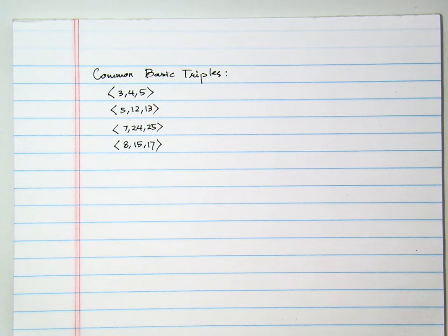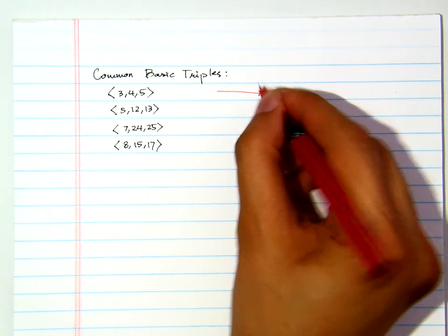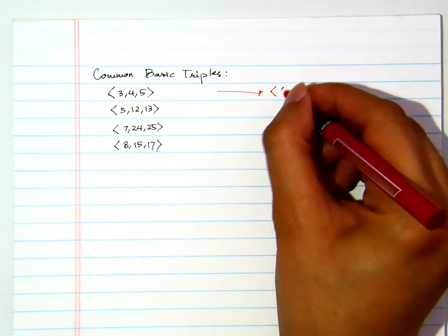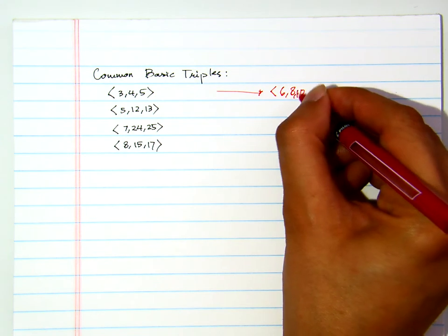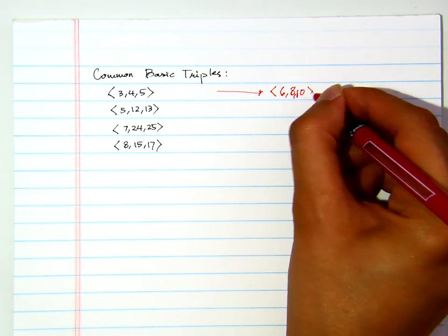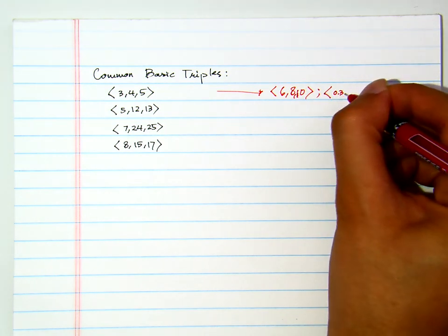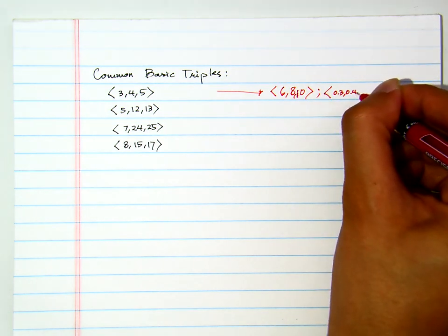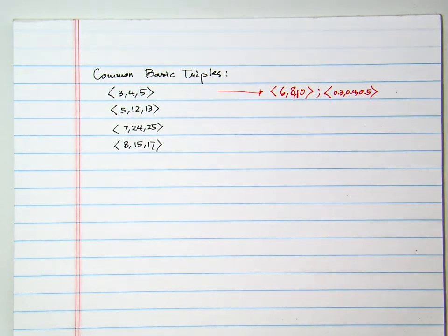Now, once we know basic triples, then you will see that multiple of them will be also triples. For example, if I multiply it by two, there's like 6, 8, 10. It's a triple. Also, if you want, you can do 0.3, 0.4, 0.5. That's also a triple.